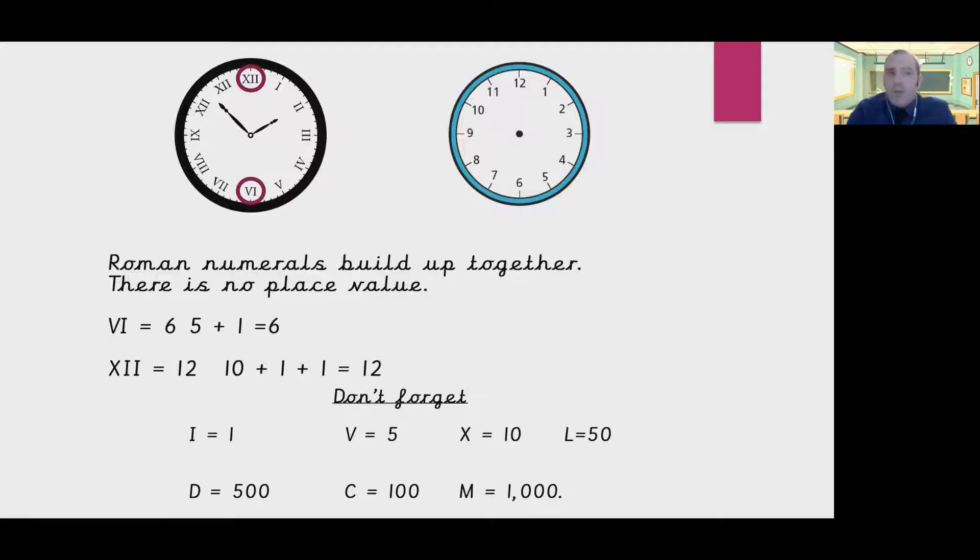Now Roman numerals don't always follow this, there are a couple of special cases. If we look at 4 and 9, if we work our way around the clock face, we have 1, then 2, then 3 I's. Now we should, if we follow the pattern of building up the numbers, have IIII for 4, but this is where it gets complicated. It's not. What the Roman numerals do is they have IV. Now where the smaller number is before the bigger number, that means you have to take it away. So this would be 5 take away 1 equals 4.